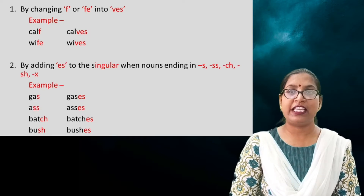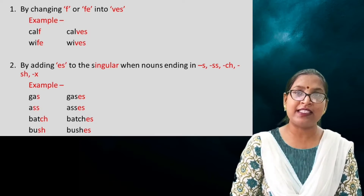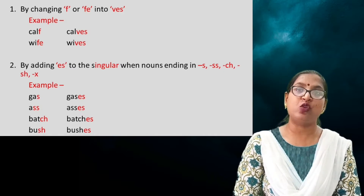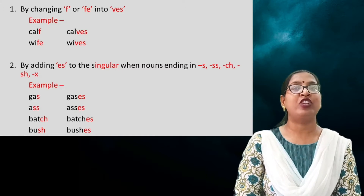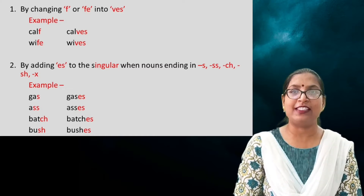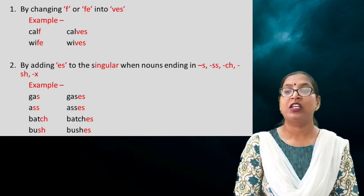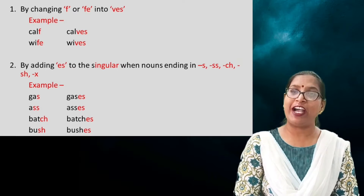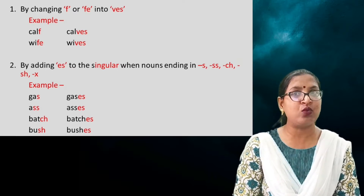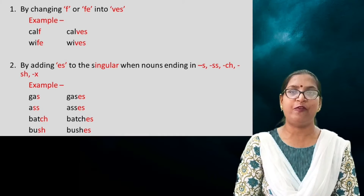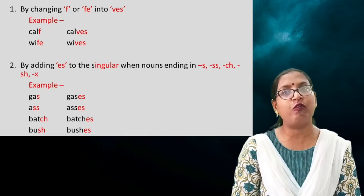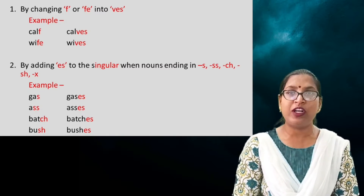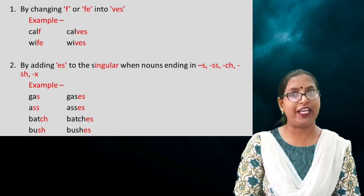For example, 'calf' — C-A-L-F. The last letter is F, so it will be changed into VES: calves. 'Wife' — W-I-F-E. The last two letters are F-E, so FE will be changed into VES: W-I-V-E-S. 'Wives' is the plural form of the noun 'wife'.